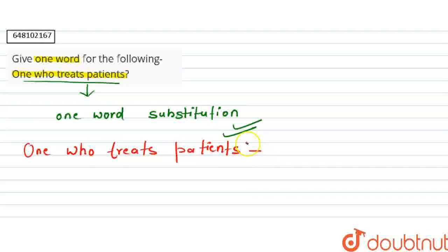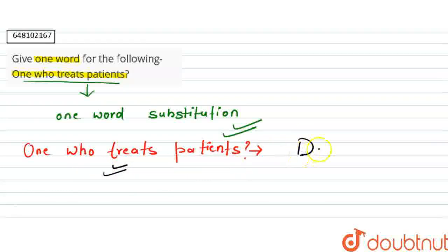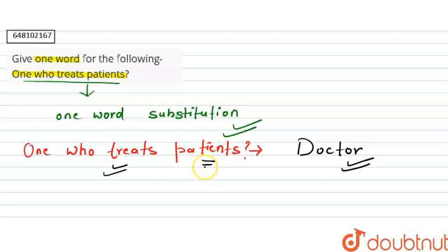Iska matlab hai — one who treats patient — matlab ki ek aisa person jo patients ko deal karta ho ya patient ko treat karta ho, unka ilaj karta ho, treatment karta ho. To us person ko hum kya bolte hai — and we all know that one word substitution for the given sentence is 'doctor', because doctor is that person who treats the patient. Doctor hai logon ka ilaj karta hai. Patient ka matlab jo marij — a person who is suffering from illness. So our answer is doctor. I hope aapko samaj aa gaya ho. Thank you.